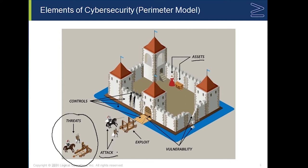Notice that our castle wall has some vulnerabilities — part of our wall has fallen down into the moat, and the castle gate is not completely closed. So the threats are going to try and exploit these vulnerabilities. The reason we would say this is an older model of cybersecurity is because all of the threats are outside of the castle. Even though we have implemented controls — a moat, a bridge, and folks dumping hot oil over the wall — it's still an older model of cybersecurity.